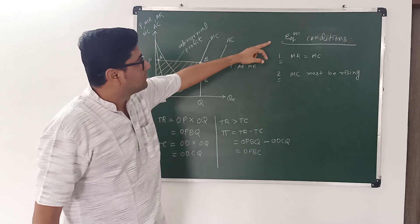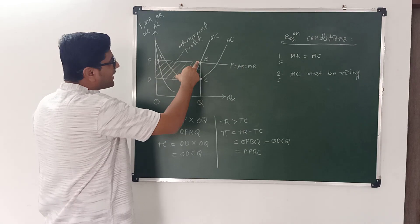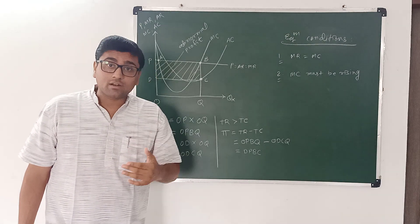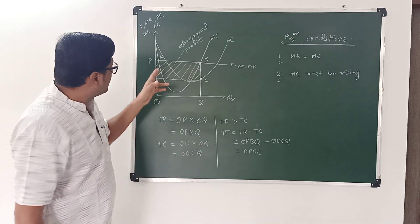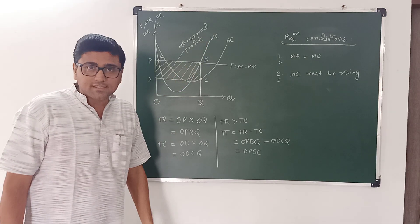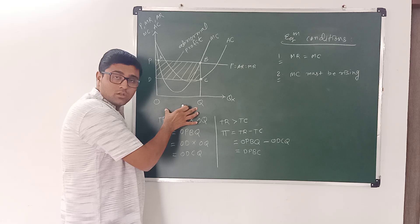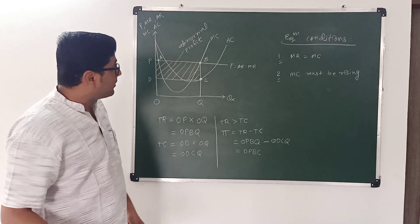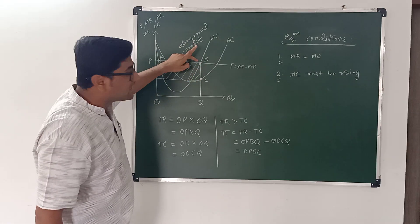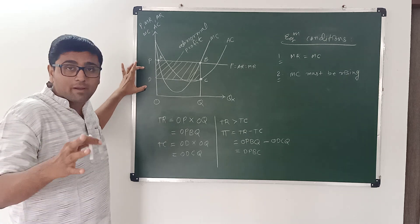The firm is in equilibrium when MR equals MC and marginal cost must be rising. At points A and B the first condition is satisfied, but at point A marginal cost is declining, so if the firm increases output after point A the firm will earn more profit and will not stop production there. At point B marginal cost is increasing, meaning if the firm produces more than OQ it will earn a loss. So the firm is in equilibrium at point B, with equilibrium output OQ and equilibrium price OP — this price is determined by the market, not by the firm, so this firm is a price taker.